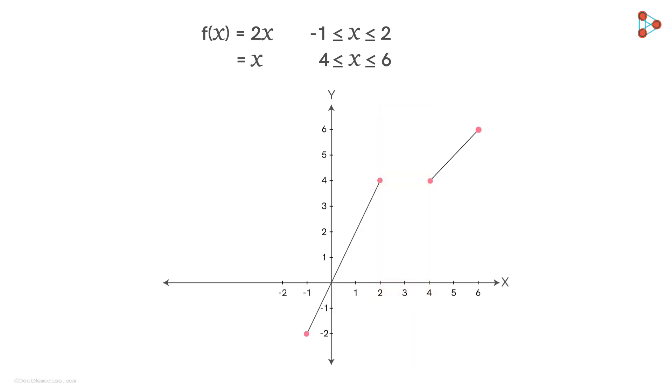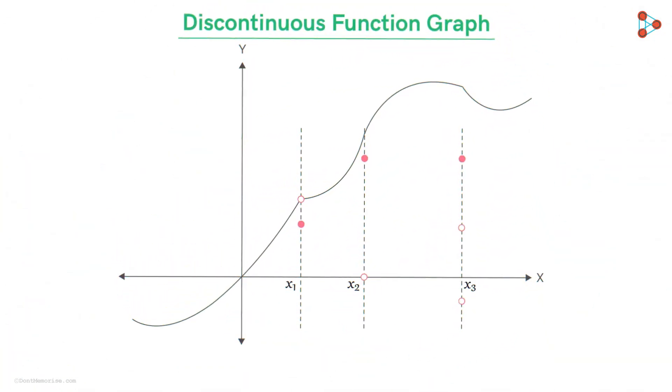Hence, earlier that was the reason why I was refraining from using the word gap as it might insinuate a horizontal gap. However, there is rarely a function you will see in the topic with such huge gaps. A better way to imagine points of discontinuity is the points where the graph is jumping either up or down.